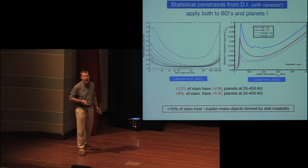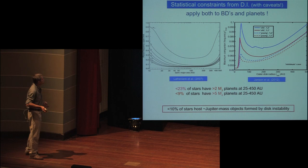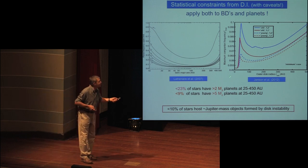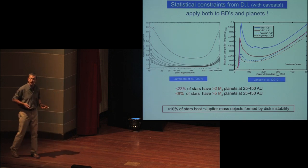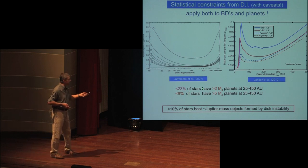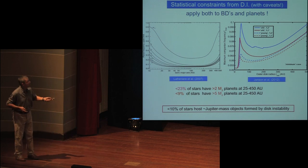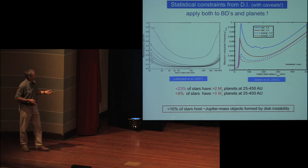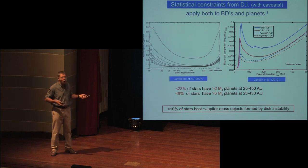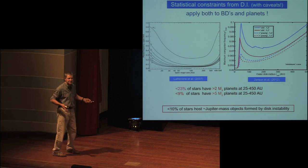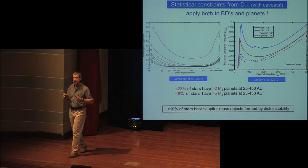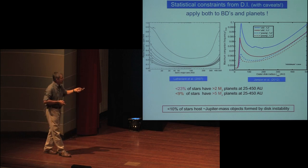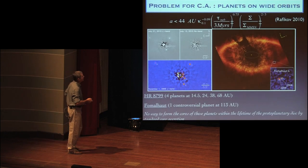What about statistical constraints from direct imaging? If you look at the results by Lafreniere et al., you'll find that less than 23% of stars have a companion larger than 2 Jupiter masses within about 450 AU. If you go up in mass, less than 9% of stars have a companion larger than 5 Jupiter masses within 500 AU. Marcus worked out the statistics, and basically right now we could say that less than 10% of stars host Jupiter-mass objects at wide orbital distances, which could be formed by disk instability. I want to stress that Marcus considered both possibilities — gravitational instability and core accretion. I doubt these numbers will change by orders of magnitude, but they will certainly improve in the near future.